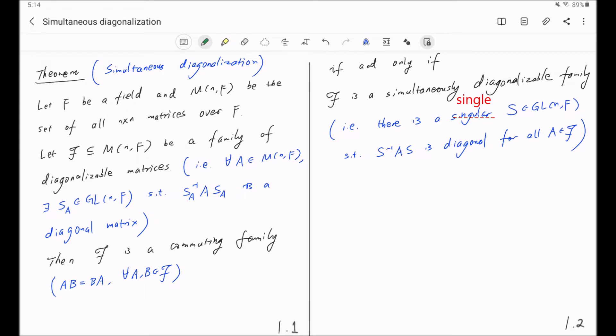Before we move on to the proof, let me leave a quick remark. The set of all diagonalizable matrices is not a simultaneous diagonalizable family. Namely, you cannot simultaneously diagonalize all the diagonalizable matrices over a given field F. Do you see why?